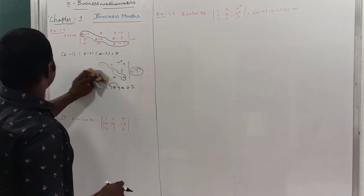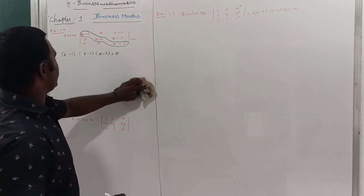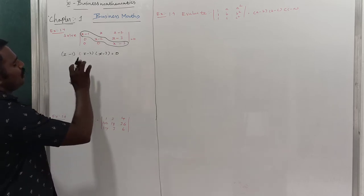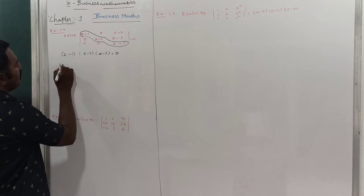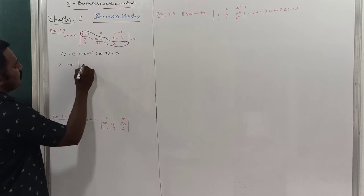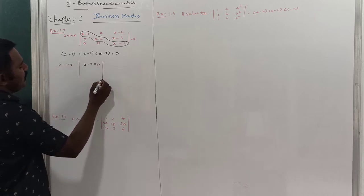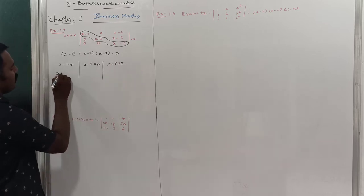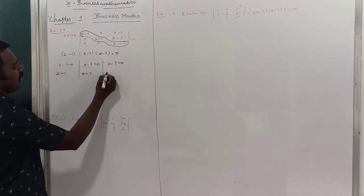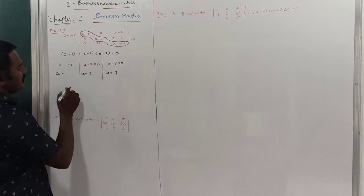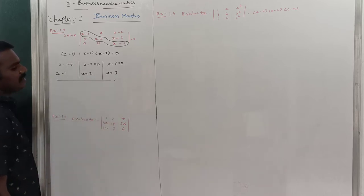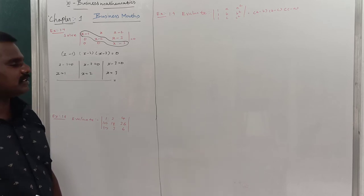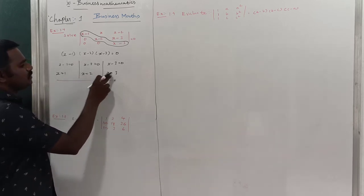Using this property, the product of the main diagonal of the original determinant is (x−1)(x−2)(x−3). Setting this equal to 0: x−1=0 gives x=1; x−2=0 gives x=2; x−3=0 gives x=3. Therefore, x = 1, 2, 3 is the answer.